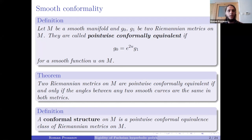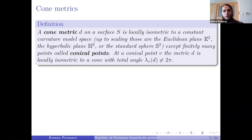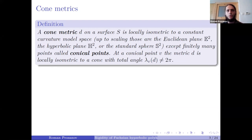There are several approaches to discretizing the notion of conformality. In the smooth world our main geometric objects are Riemannian metrics, but in discrete geometry those are con metrics. A con metric on a surface is something that locally is isometric to a constant curvature model space — up to scaling, either the Euclidean plane, the hyperbolic plane, or the standard sphere — except at finitely many conical points, where the metric is locally isometric to a cone with total angle distinct from 2π.